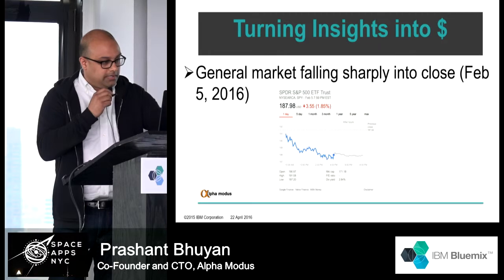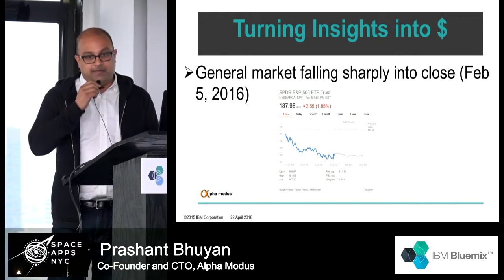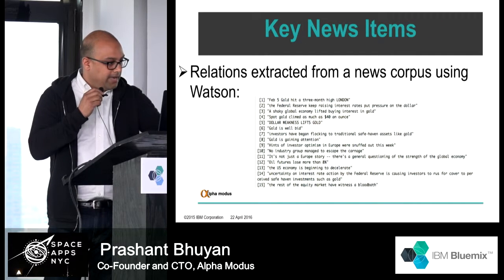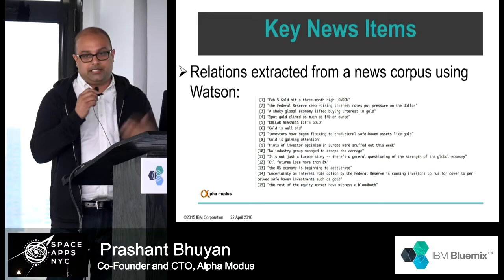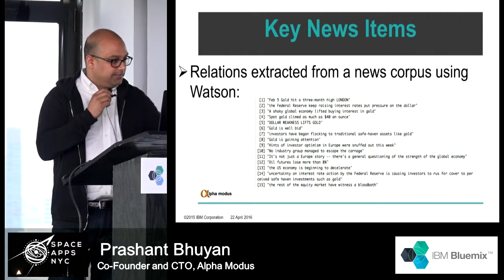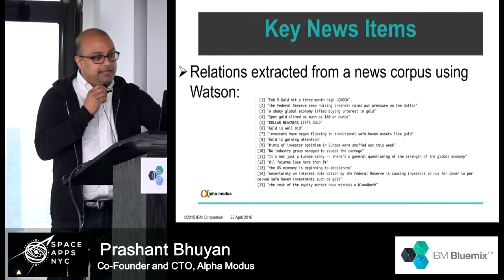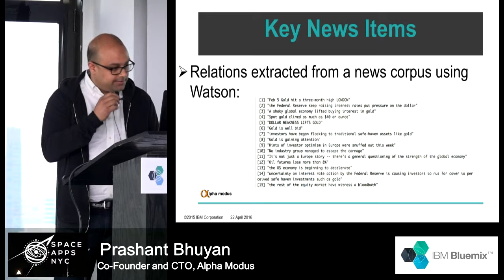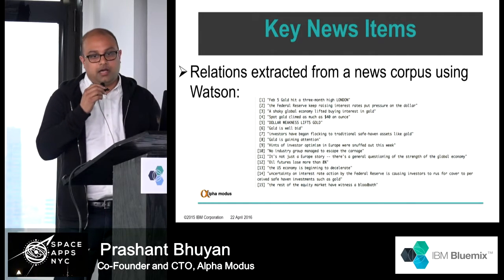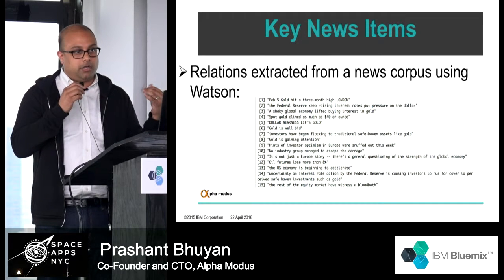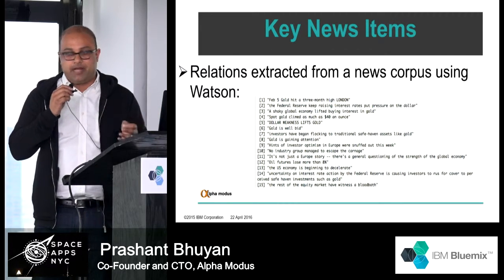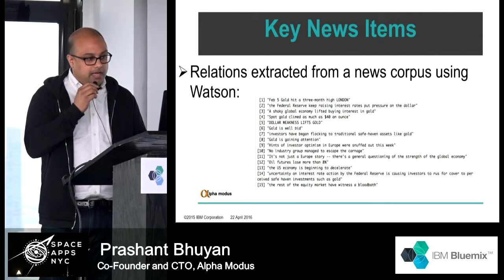On February 5th, 2016, the S&P 500 was dropping precipitously, down about 1.85% into the close of trading. Key headlines extracted from a large corpus of data in real time showed: the U.S. economy is beginning to decelerate, gold is gaining attention, dollar weakness lifts gold, and a shaky global economy. The key concepts are weakness in oil, weakness in U.S. and European central bank policy, but a flight to safety and to gold. This coincided with strong buy imbalances in gold and weak imbalances in energy and U.S. equities.